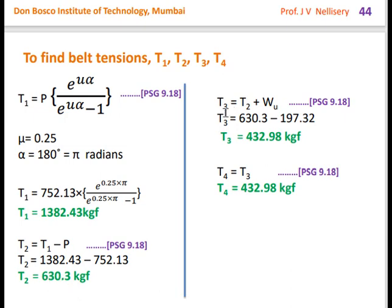T3 = T2 + Wu ≈ 432.98 kgf. T4 = T3 = 432.98 kgf (as given in PSG 9.18). Therefore, T1 is the maximum tension in the belt.